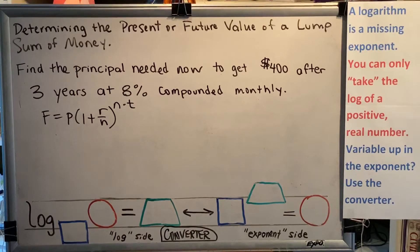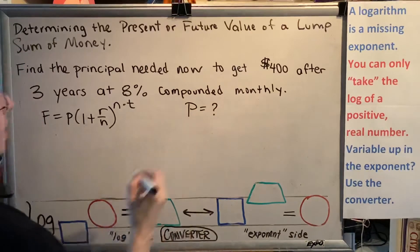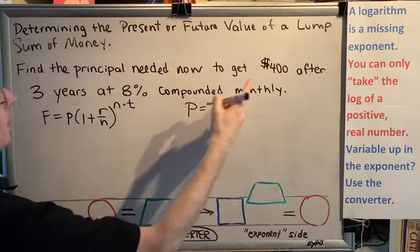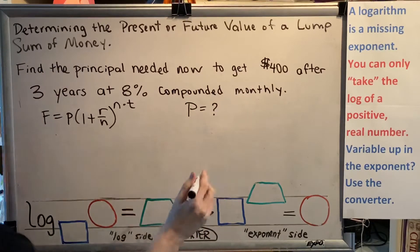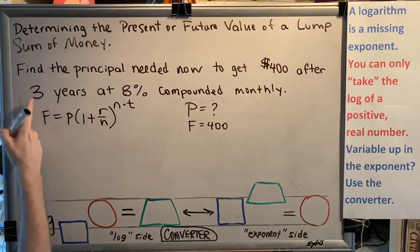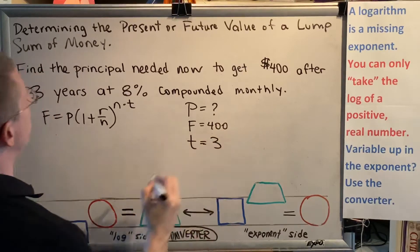Let's read the problem and identify the values of the variables as we go. Find the principal. So that means P will be left as P in the equation. It's what I need to solve for. Needed now to get $400 at some point in the future. So F is equal to 400. When?